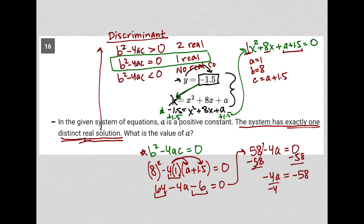And then I can divide both sides by negative 4. And get a equals, let's see what I get as a decimal in my calculator for 58 over 4: 14.5. So a is equal to 14.5. That's what the question asked for. What is the value of a? So I'm all finished there. 14.5 is my correct answer here.